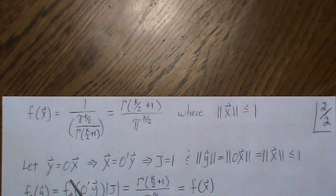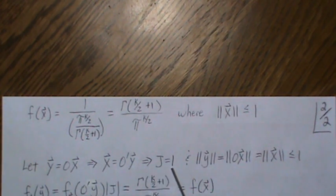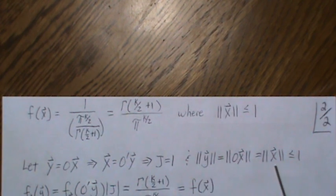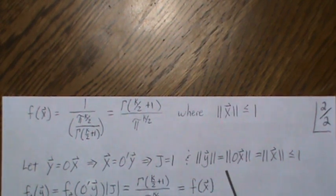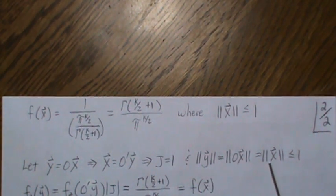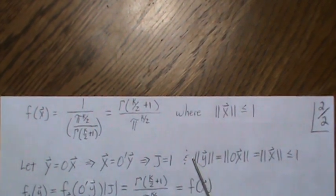Then if we take a rotation of x, which is this, back solve for x, Jacobian's 1. All these, this length is the same as this thing, which we know is less than or equal to 1.